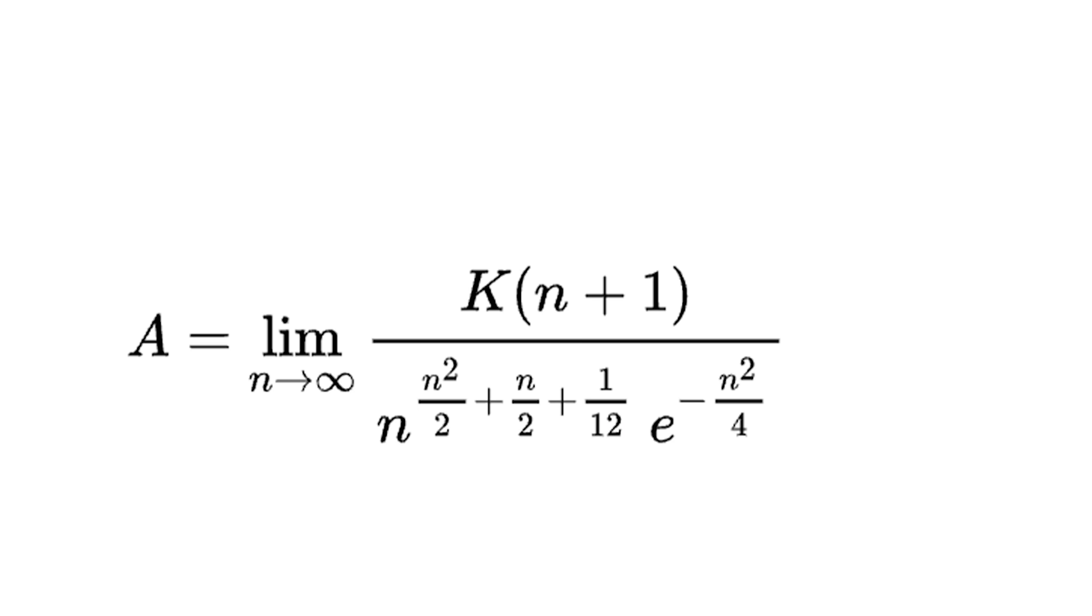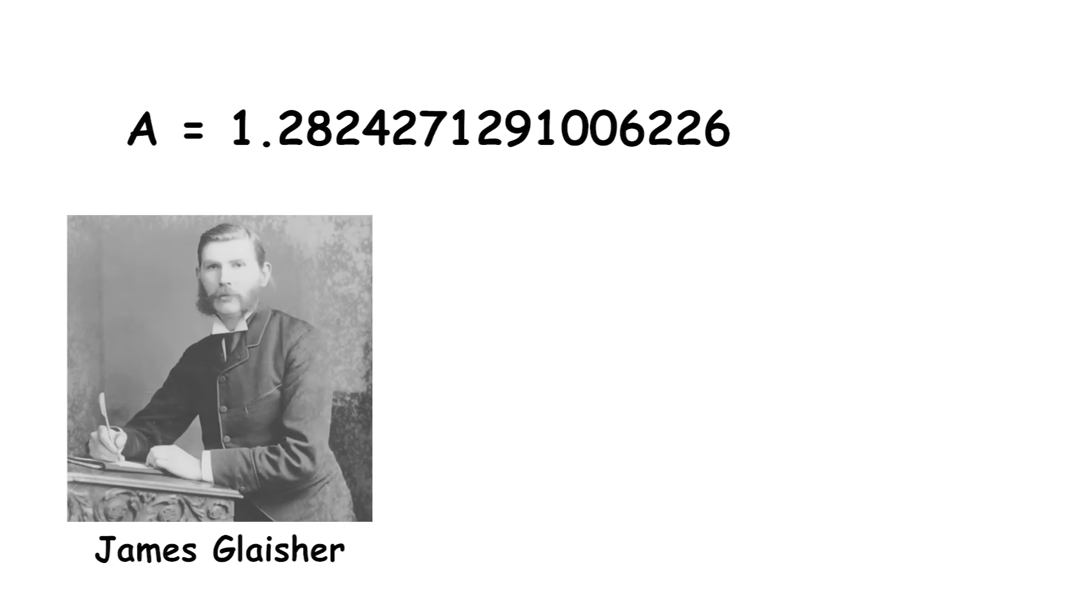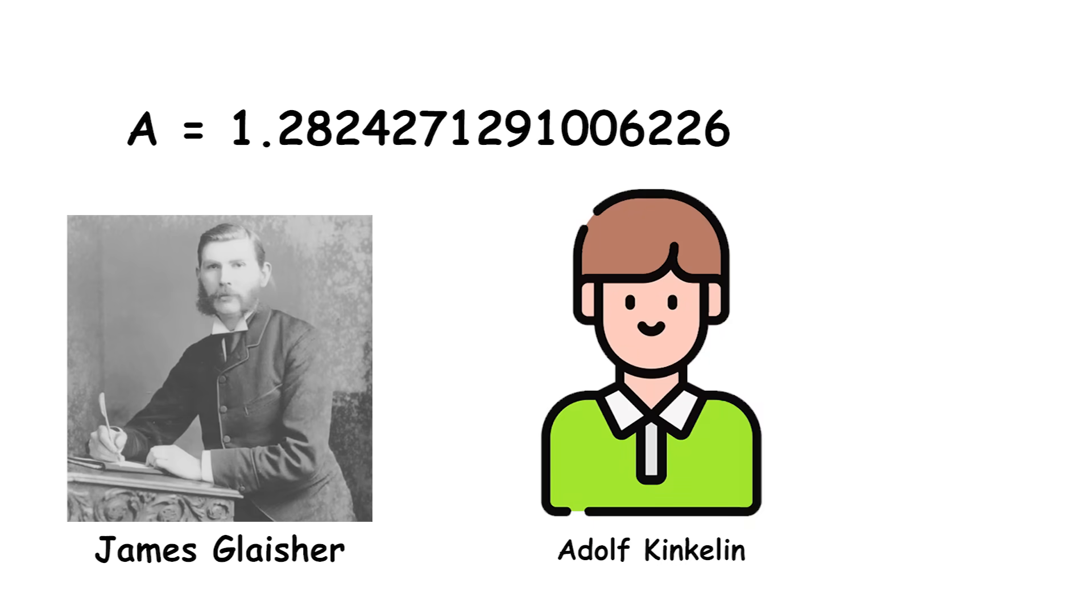The Glaisher-Kinkelin constant is a real number approximately equal to 1.282. It is named after the mathematicians James Glaisher and Adolf Kinkelin, who independently studied and calculated this constant in the late 19th century. The Glaisher-Kinkelin constant appears in various mathematical and physical formulas, often in connection with the gamma function. It is closely related to the asymptotic behavior of the gamma function, which is a fundamental function in mathematics with applications in probability, statistics, and physics.